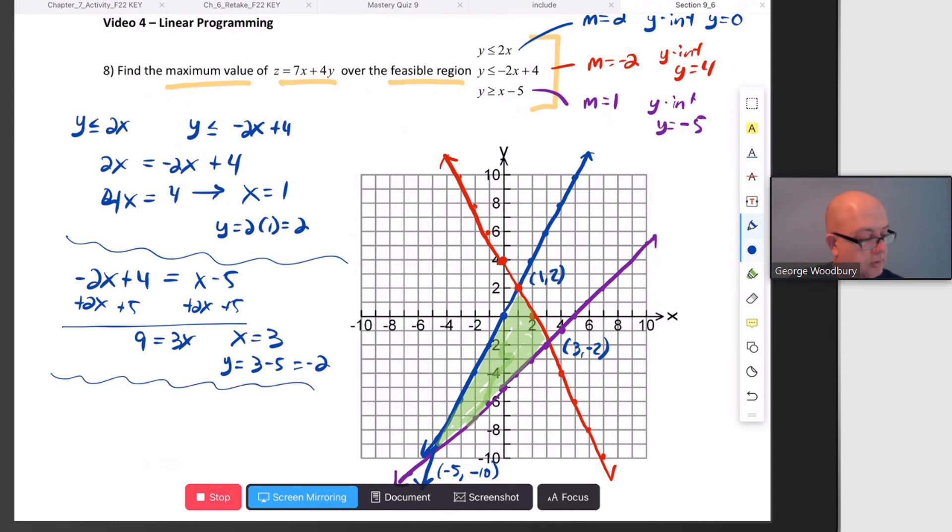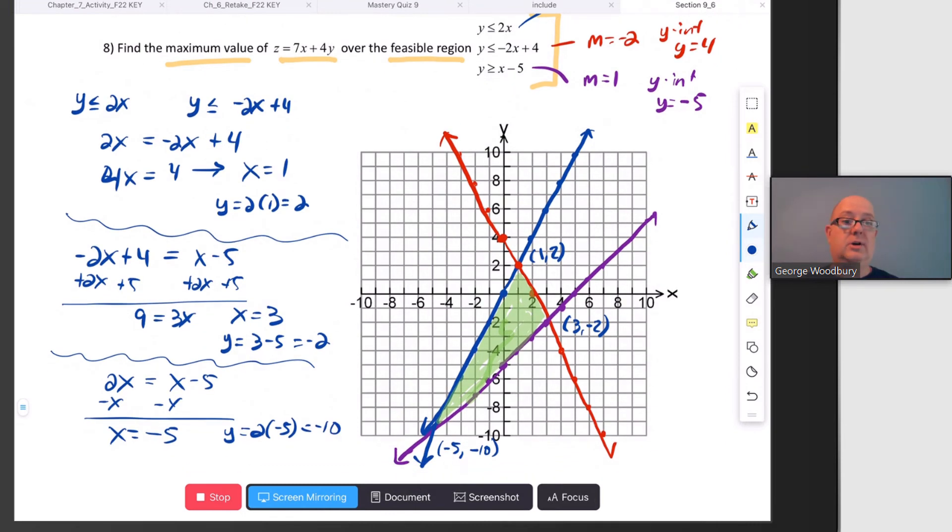Finally, where the blue and purple lines cross: 2x = x - 5. Subtract x, and we get x = -5. y would be 2(-5) = -10. So the coordinates are all correct reading them from the graph, but that's how you would find them algebraically.